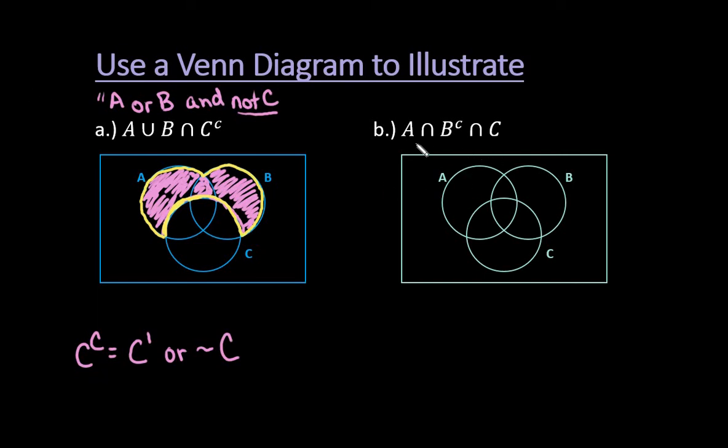So the next one is remember that this symbol is and. So we would have A and not B and C.